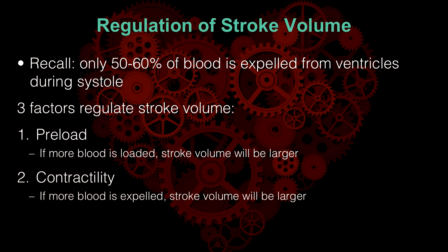The second characteristic that affects stroke volume is contractility. Contractility describes how forceful a contraction the ventricles make, or how much the ventricles squeeze. Contractility taps into the remaining blood that's normally left in the ventricles. If there's a more forceful contraction, more blood is expelled and stroke volume will be larger.